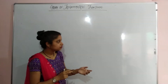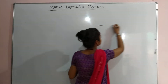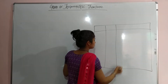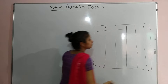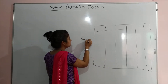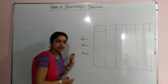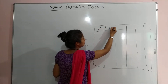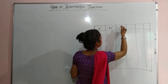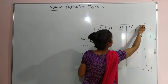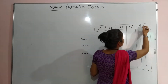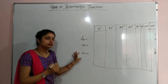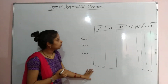Let us draw the table once again. This table has sine x, cos x, and tan x as the trigonometric ratios. The angles I am going to take are 0°, 30°, 45°, 60°, 90°, 180°, 270°, and 360°. These are the standard angles whose values you know very well.